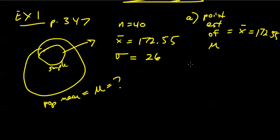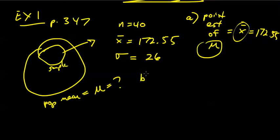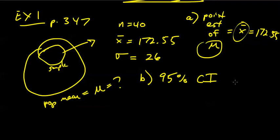We're basically using x-bar to estimate our unknown mu value. Maybe it's close, maybe it's not — depends on the drawing of the sample. Perhaps more interestingly, Part B asks us to create a 95% confidence interval estimate for the population mean weight of all men. To do this, we're going to use our z-interval command.